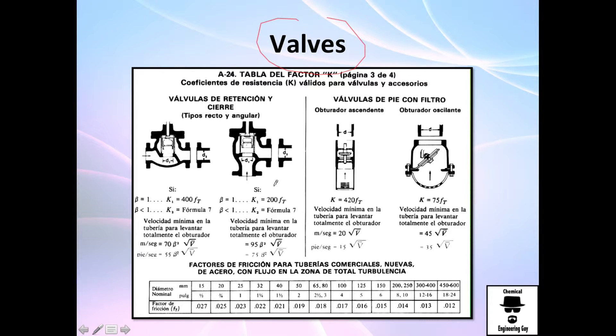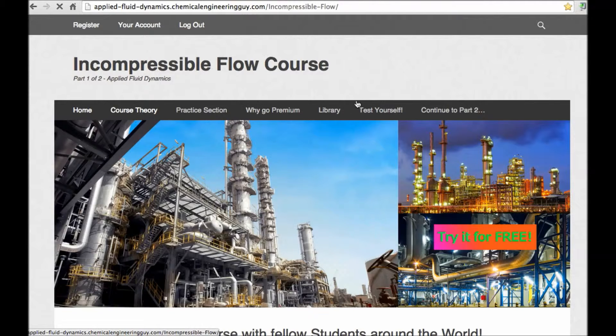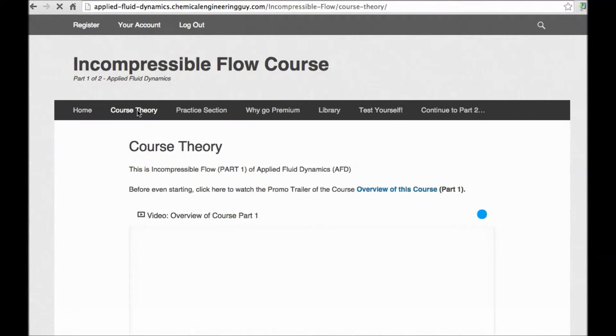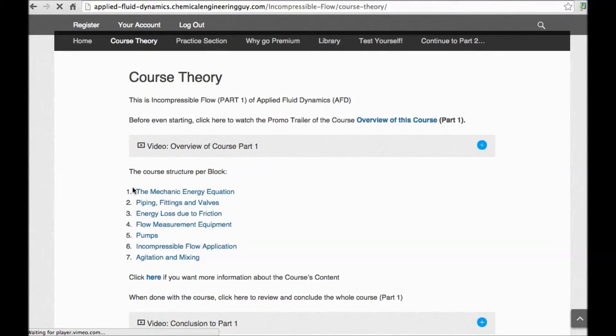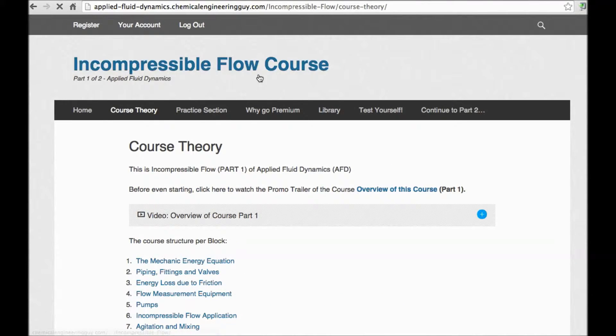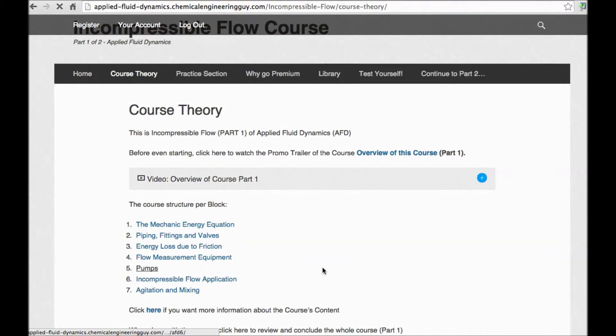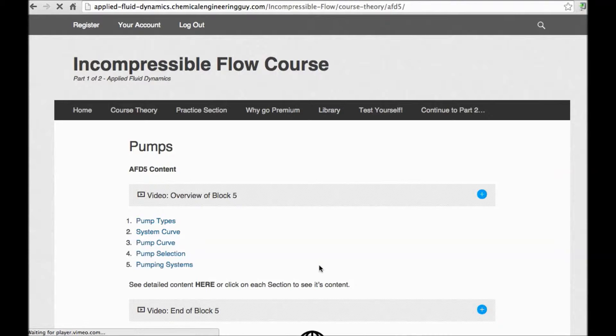Return bend, we have it right here. 0.2 for flanged. The T, which goes here and continues here. And many other values for elbows. Valves. It's another thing, it's actually valves. K values are not only just a number, but they normally add a friction factor here. If you recall from past sessions, the friction factor calculated in turbulence depends only on the relative roughness. If you haven't checked out the complete course outline, you can always do it here. Course theory. You got all the seven blocks that are included in this incompressible flow course. For instance, you want to check out what's in the pump block, which is essentially pump block 5, you can check out pump types, system curve, pump curve, pump selection, and pumping systems.